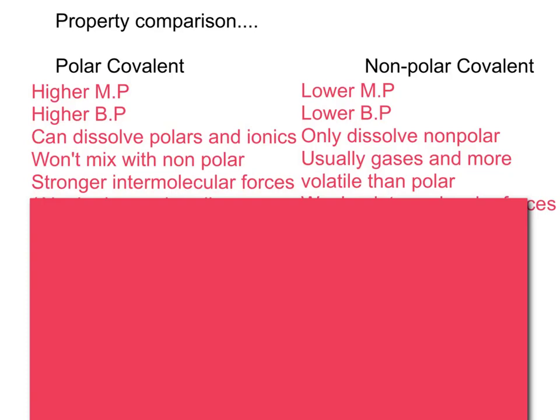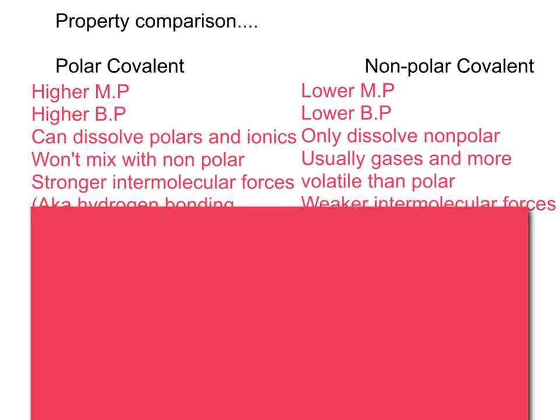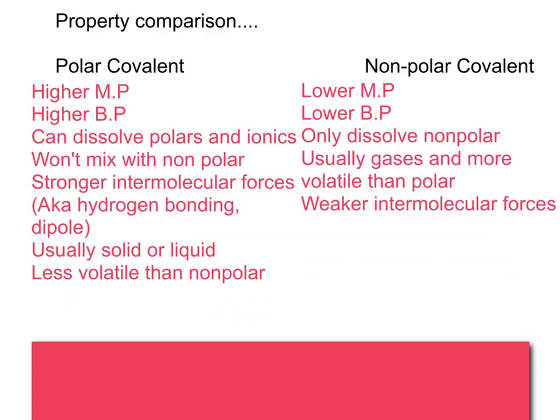For non-polar, they're usually gases, and they're more volatile than others. Polar covalent have stronger intermolecular forces, aka hydrogen bonding, while non-polar have these weaker intermolecular forces. And due to that, it causes the ones that have stronger intermolecular forces to have higher melting points and higher boiling points. It takes more energy to force the molecules away from each other. And the weaker intermolecular forces have a lower melting point or lower boiling point. So these are going to tend to be gases at lower temperatures than the polar covalent would be. Usually a solid or a liquid if you're polar, and they are less volatile than non-polar. If you didn't get all these copied, I'd suggest pausing now, copying them down, and then move on to the next slide with us.